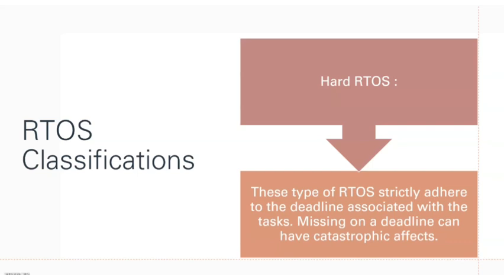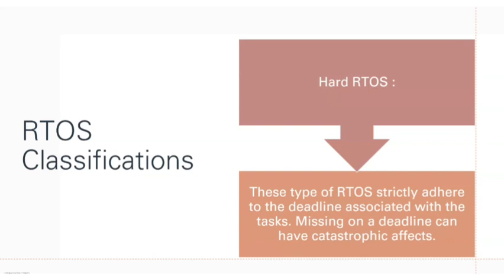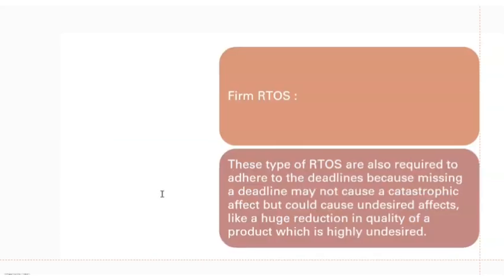For example, in medical-related applications using RTOS, you should use a hard real-time operating system, because if the deadline is missed it can affect a person's life — that type of system is called a hard real-time operating system. The next type is the firm real-time operating system, which is almost the same as hard real-time. The only difference is that if the deadline is missed, a catastrophic effect won't occur, but some undesired effects or results will be produced. The effect is not extremely serious, but it is still serious.